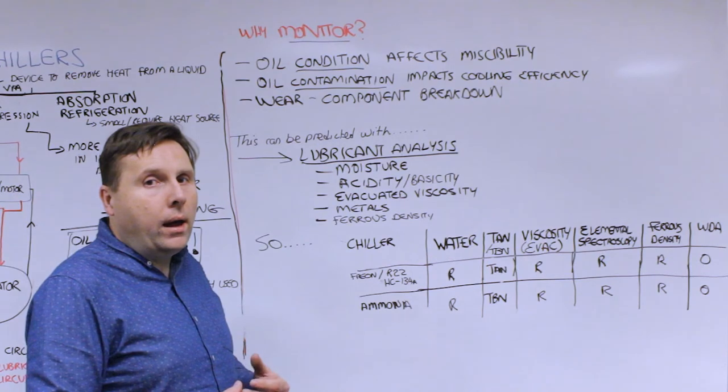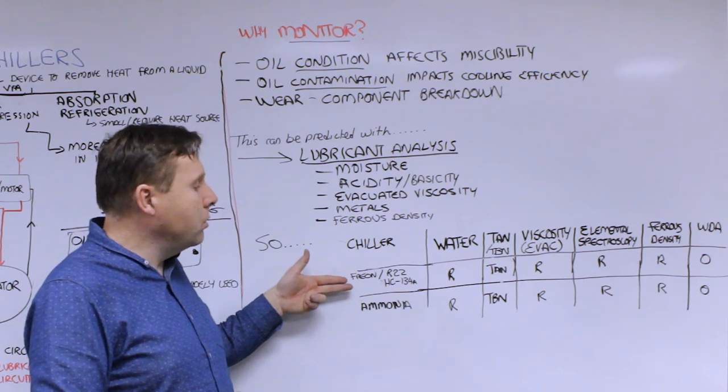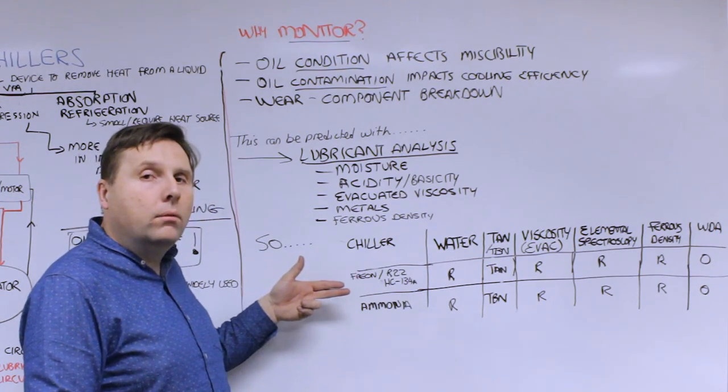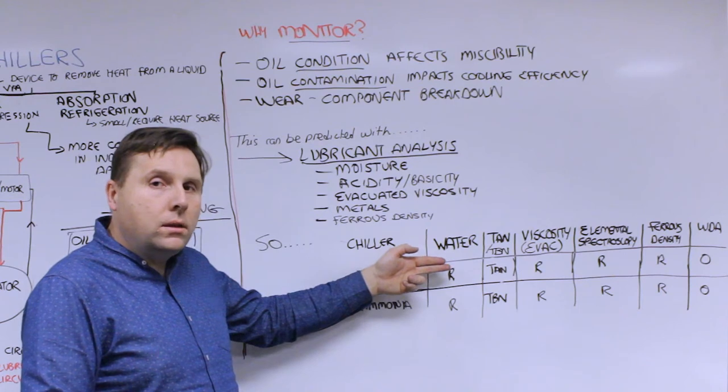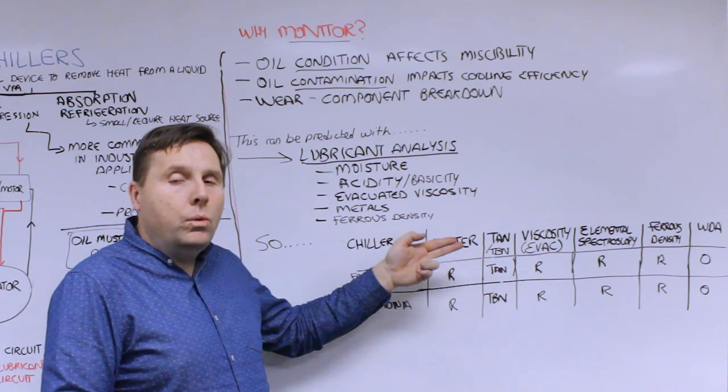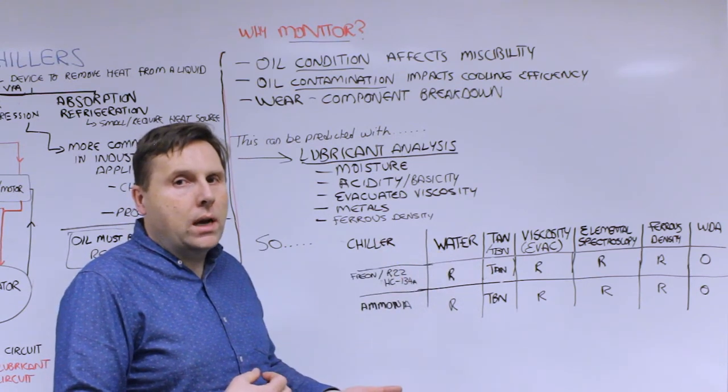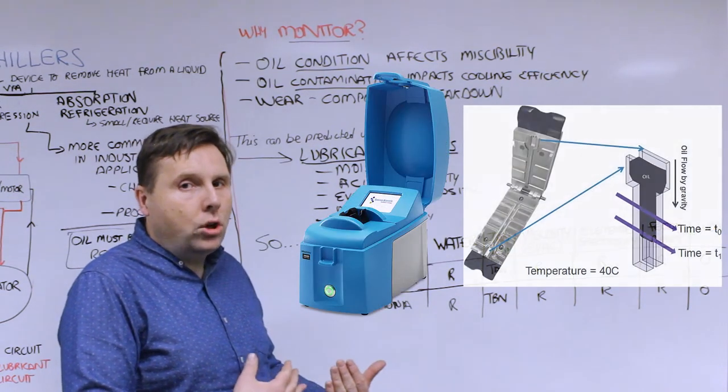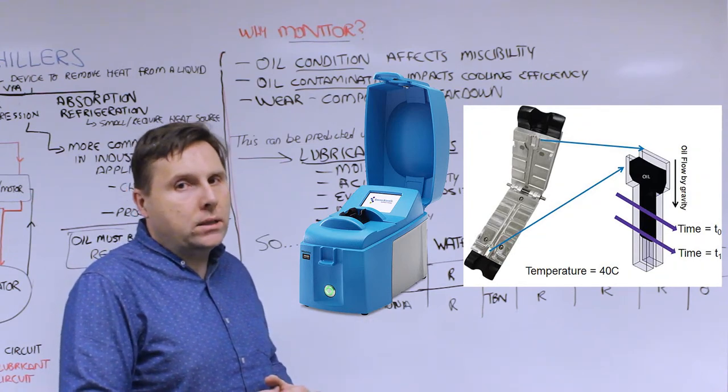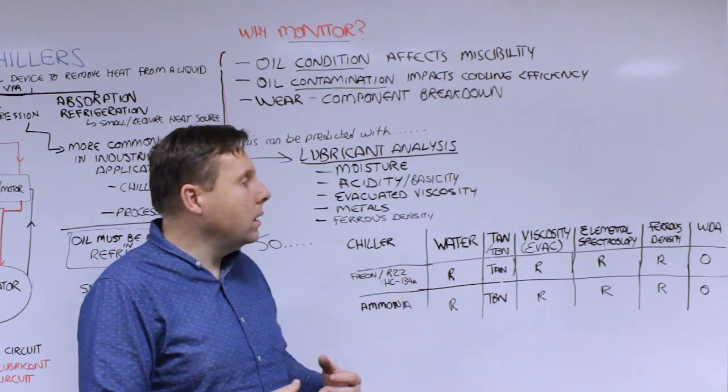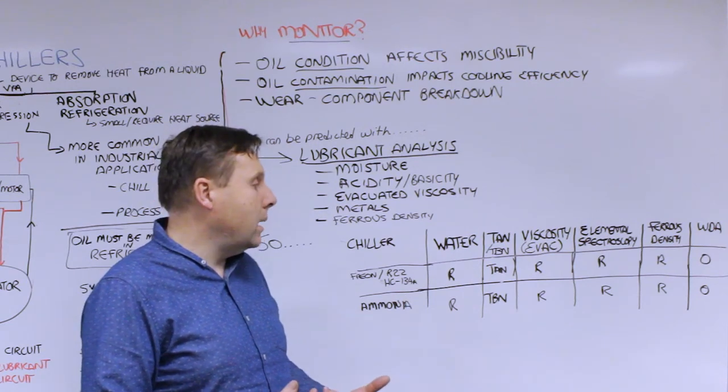When we recommend running oil analysis tests for these systems: if you have a freon, R22, or HC134 chlorinated based refrigerant, we recommend you run water analysis, total acid number to look at acidity, viscosity—when we say evacuated viscosity you want to remove that refrigerant before you run the viscosity. If you use a MiniVis system with the Hele-Shaw cell, you do not have to remove it; you can introduce the sample directly and it out-gases as it's running. Include elemental spectroscopy for wear metals, ferrous density for large debris, and wear debris analysis as an option. For ammonia based systems, everything's the exact same except for acidity—we're worried about basicity.